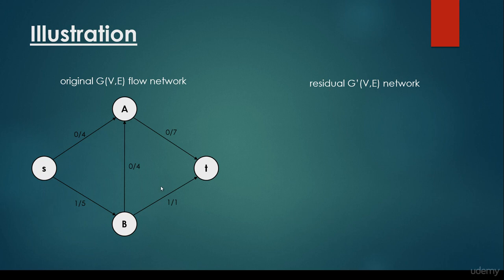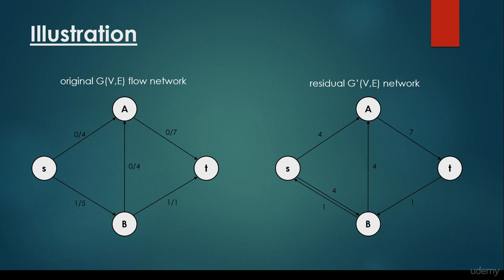As you can see, we incremented the flow from 0 to 1 on both edges. That's why we have to reconstruct the residual network — the flow is 1 and the capacity is 1, so instead of a forward edge we are going to have just a backward edge. We update the residual network: there's a 4 pointing from S to B because we can still flow 4 more units to reach capacity 5. There's a backward edge with value 1 because we can send back 1 unit. And since flow equals capacity on the S→A edge, we have just a backward edge with value 1.